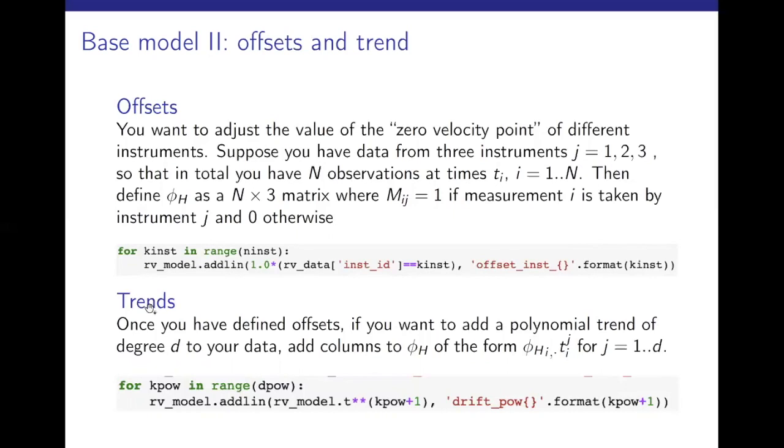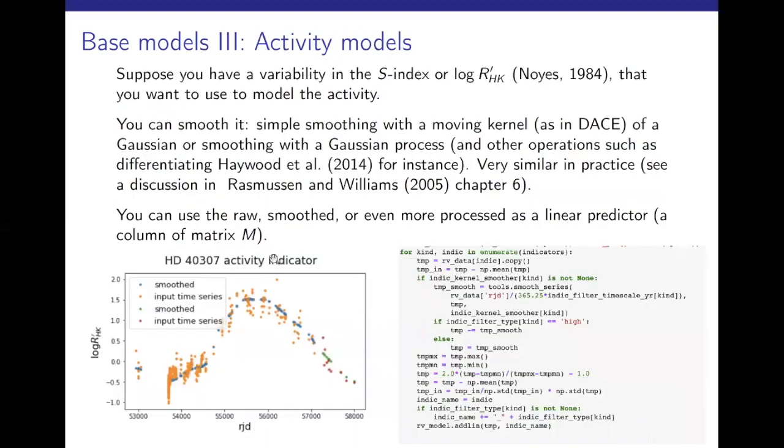You can also define trends in the form of a polynomial. You can add a polynomial of arbitrary degree to your model, which might represent the curvature from a stellar companion, which have very long-term variation. And you might not want to fit a sinusoidal function on it, but a low-order polynomial will do.